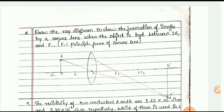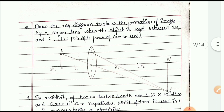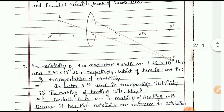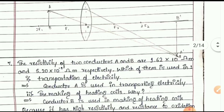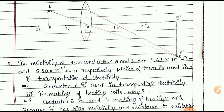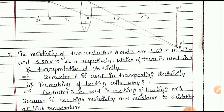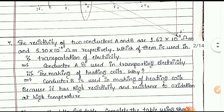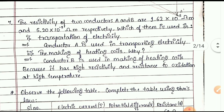The resistivity of two conductors A and B are 1.62 × 10⁻⁸ ohm-meter and 5.20 × 10⁻⁸ ohm-meter respectively. Conductor A is used in the transmission of electricity. Conductor B is used in making heating coils because it has high resistivity and resistance to oxidation at high temperature.